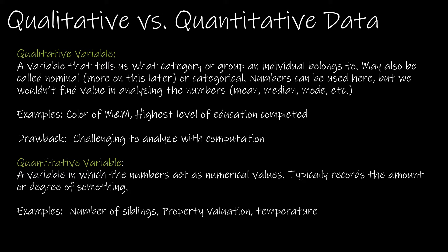A qualitative variable — which you might also hear called nominal or categorical — is essentially a variable that tells us a category or group an individual belongs to. Numbers can be used here, but we wouldn't find value in analyzing them. For instance, if I asked you your month of birth, I was born in December, which is denoted by the number 12. However, if I had a group of data including everyone's month of birth, it would not make sense to find the average of that data.